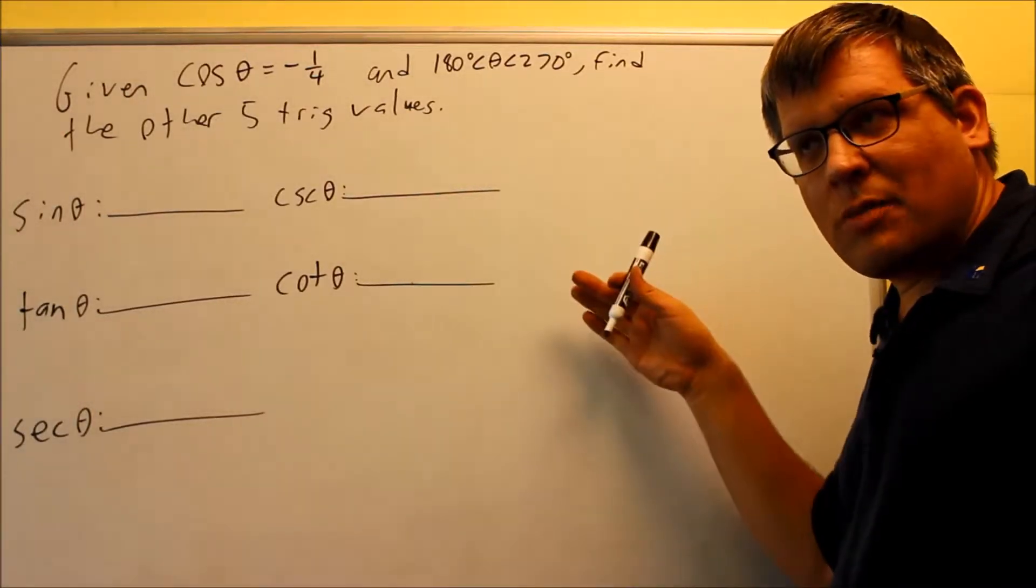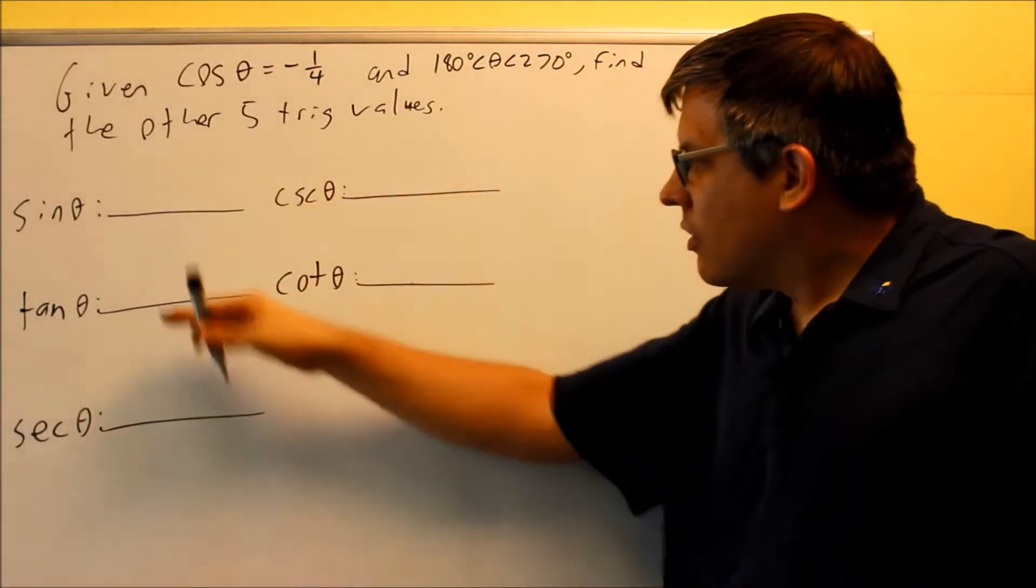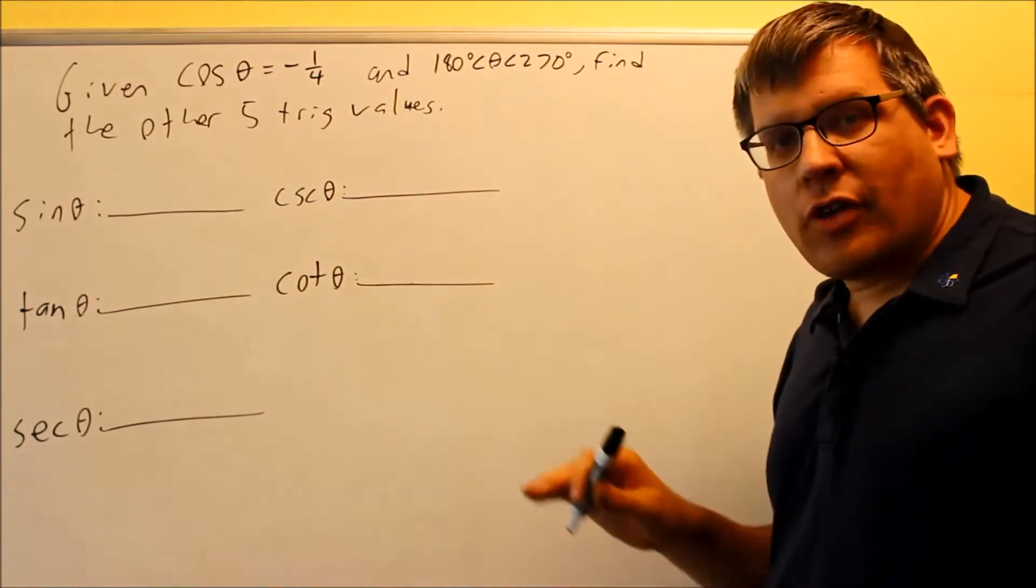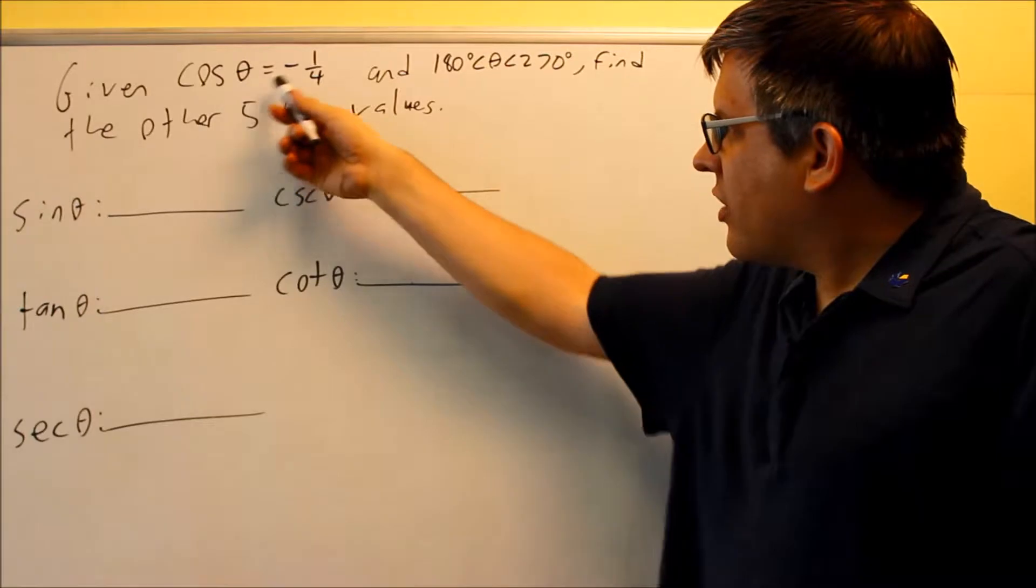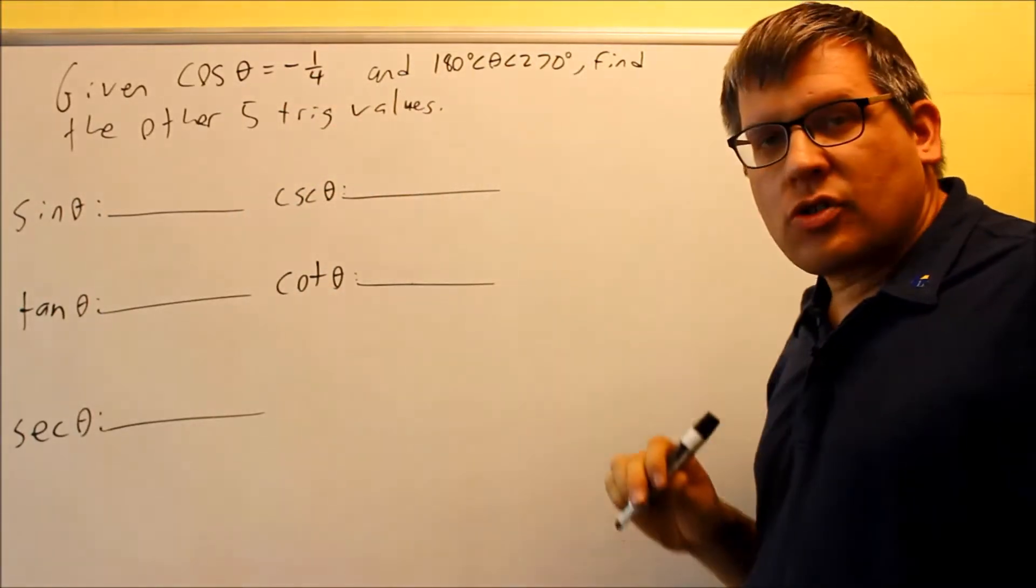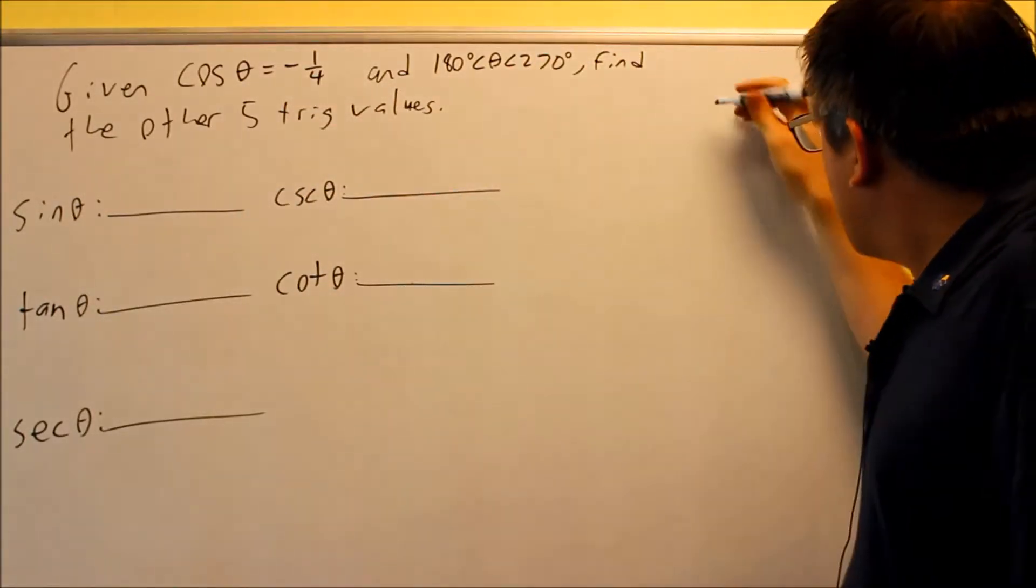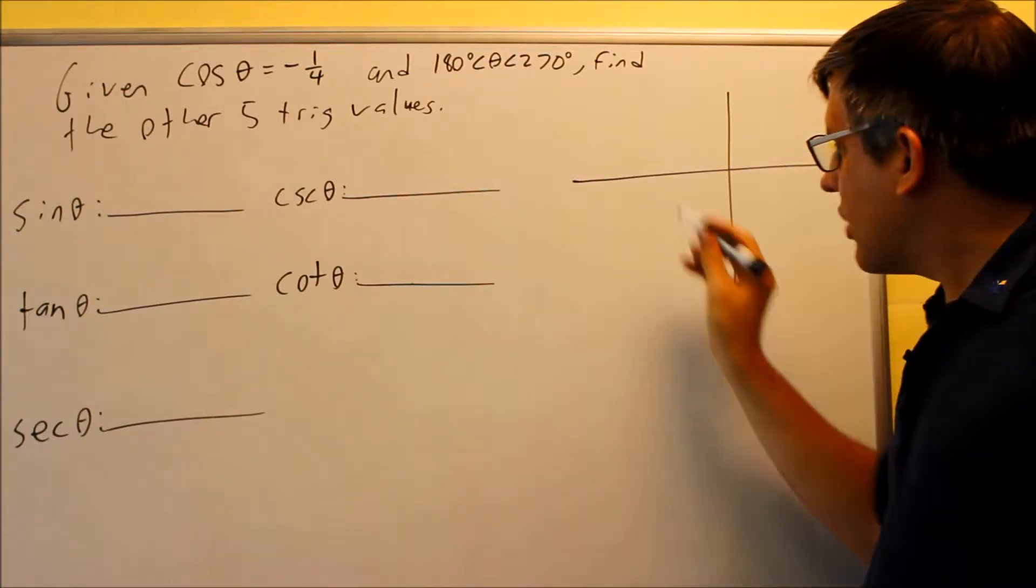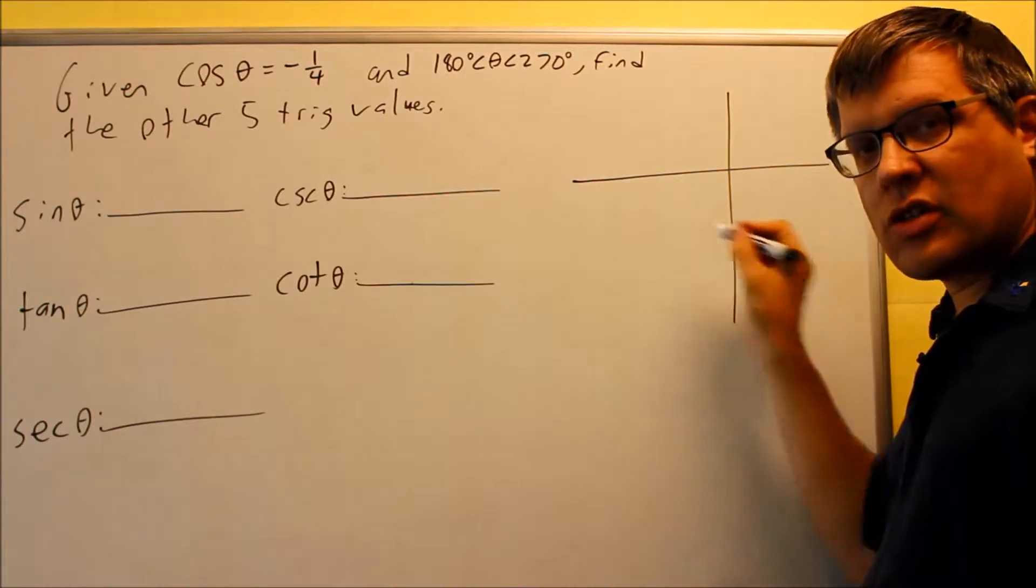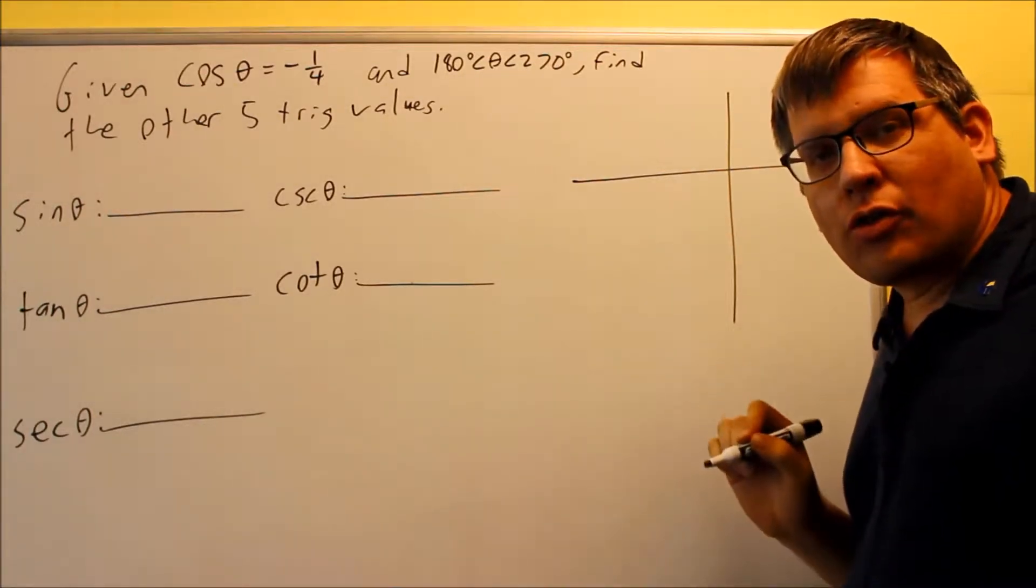Okay, for this next example, we're still doing the same thing, we're trying to find the five other trig values. This time, they give us cosine is negative one-fourth, but they tell us which quadrant that we're in. So based on that, we know that this should be drawn in the third quadrant because that's between 180 and 270, that's always going to be your third quadrant.